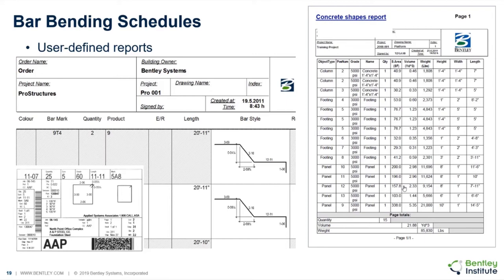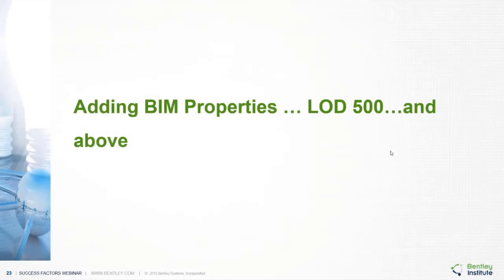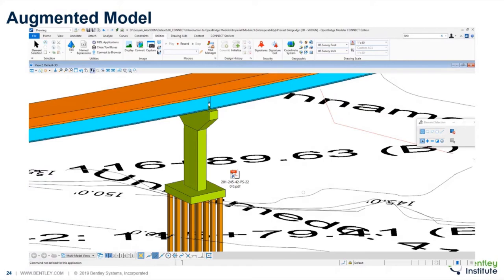With 2D plans, quantities, and reports, you're ready to submit your work — traditionally as PDF documents or paper plans. But what if you want more? What about adding extra information not just for 2D plans, but actually adding extra data? This is what we call extra beam properties, reaching LOD Level of Development 500 or above, where we need to augment the model with extra information that is not CAD-related.